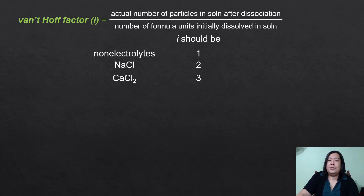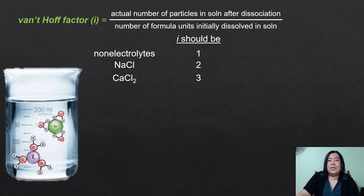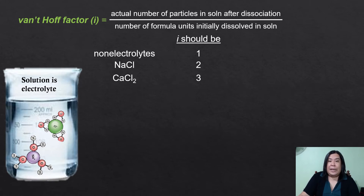How do you determine the Van't Hoff factor? There is an easy way if you know the different solubility rules — whether a substance dissolves or does not dissolve in water. For example, sodium chloride, or simple table salt, completely dissolves in water. When sodium chloride dissolves in water, it dissociates into its component ions: sodium ion and chloride ion. So this solution is an electrolyte because ions are present, and the Van't Hoff factor of NaCl is 2.